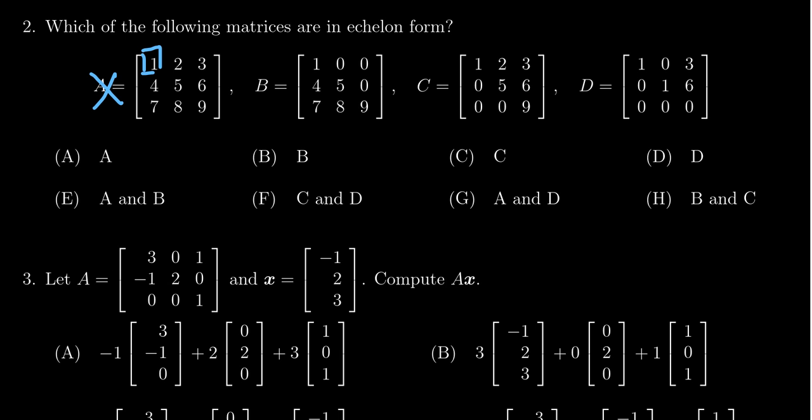Let's look at matrix B — similar type of thing. This matrix is non-zero and the leftmost non-zero column is the first column, so there would be a pivot in the first position. But there are non-zero entries below the pivot position, so therefore this matrix is not in echelon form.